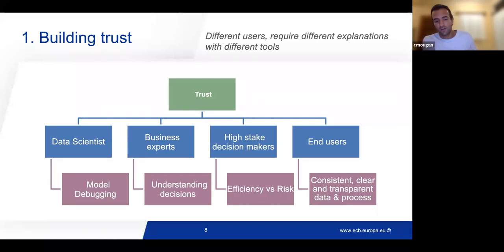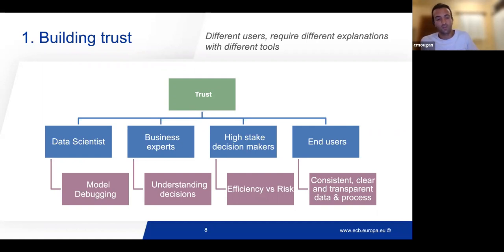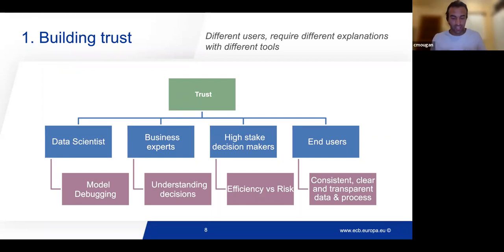For data scientists, we found that we need to do model debugging. The explanations they encounter during the modeling process involve checking that meaningful features are selected by the machine learning model, that the model doesn't have data leakage, and that the performance when deployed is very high. On the other hand, business experts have economic, business, and domain knowledge, and what they expect is that the machine learning model behaves in the way they anticipate. They need to understand what's going on and how decisions are being made.